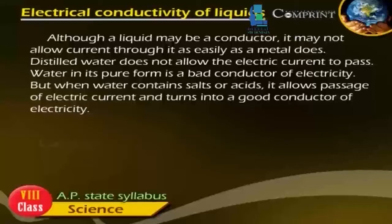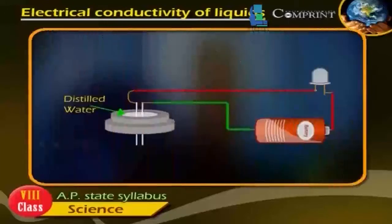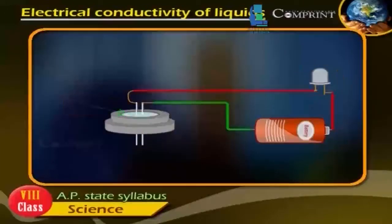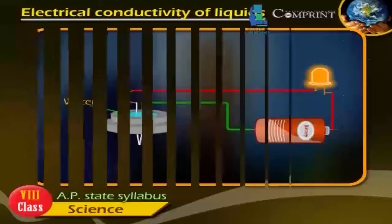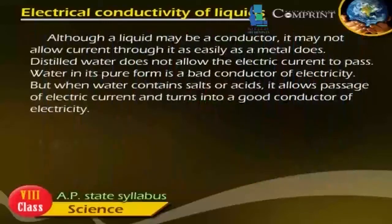Although a liquid may be a conductor, it may not allow current through it as easily as a metal does. Distilled water does not allow electric current to pass — water in its pure form is a bad conductor of electricity. But when water contains salt or acid, it allows passage of electric current and turns into a good conductor of electricity.